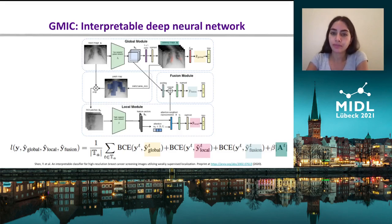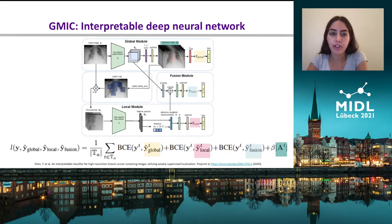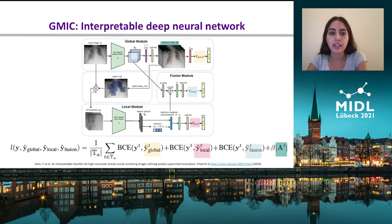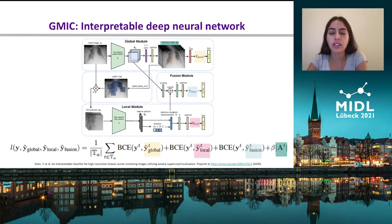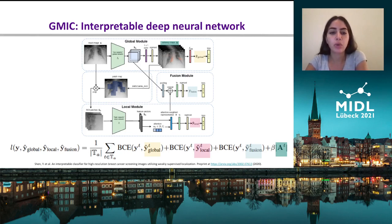This is an overview of our network — the globally aware multiple instance classifier. This network has two desirable properties. First, it generates interpretable CAM maps that highlight regions in the chest x-ray that correlate with clinical deterioration, and these CAM maps are generated using our global module. Second, the network processes high-resolution information using its local module in a memory-efficient manner. This avoids aggressive downsampling of the input image, which is a technique commonly used on natural images. Finally, the fusion module combines both global and local information in order to compute the final prediction. Shown at the bottom of the slide is the overall loss function of the model.